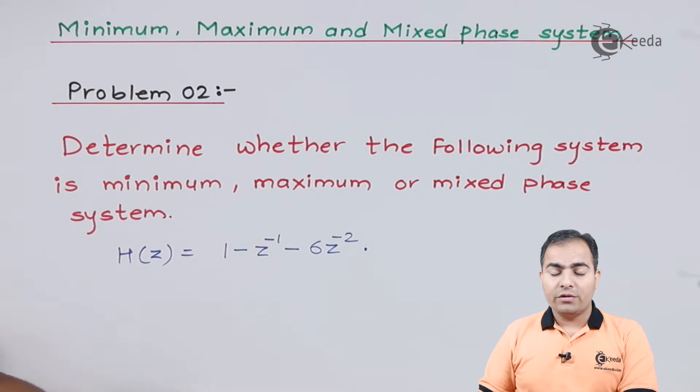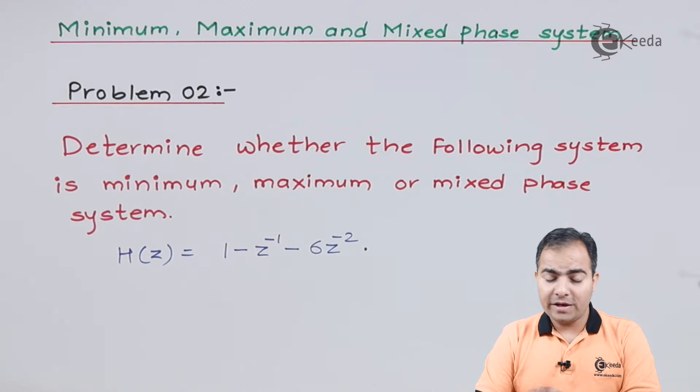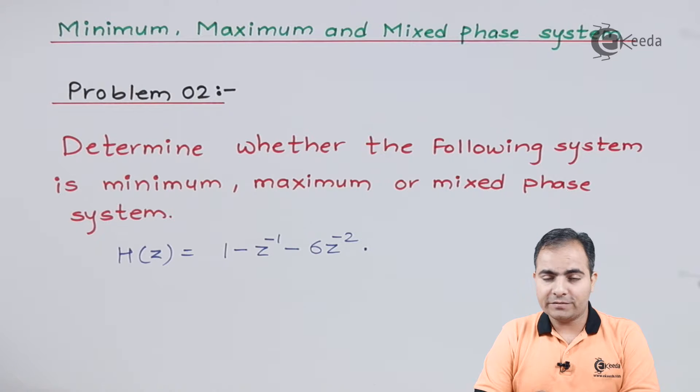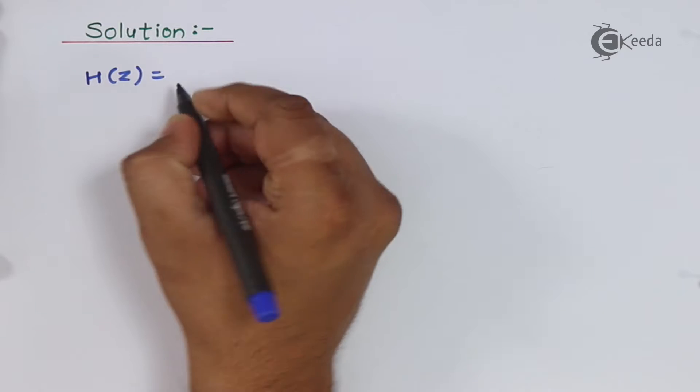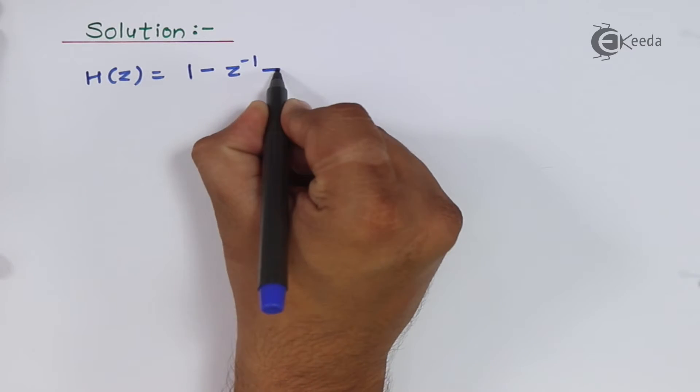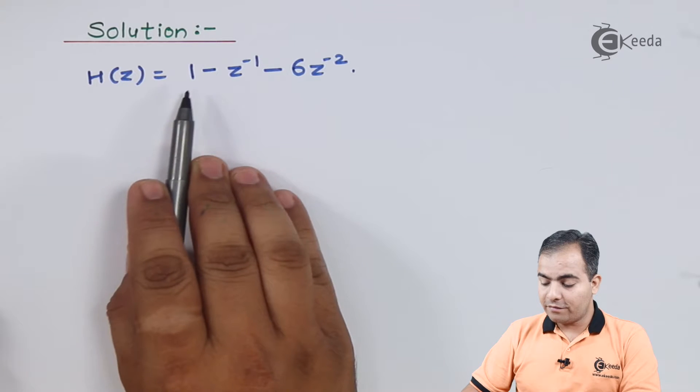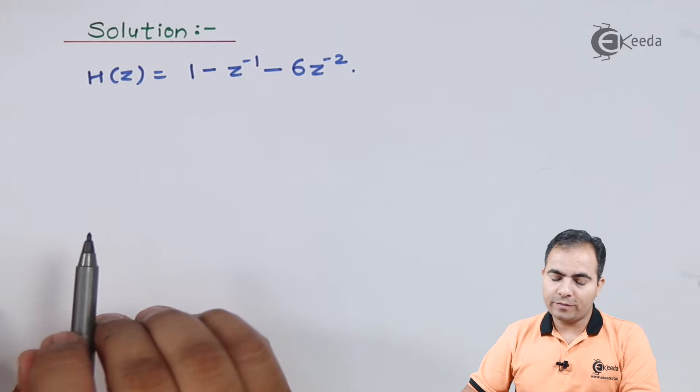You should know the definition of minimum phase, maximum phase, and mixed phase system to solve this question. First, we'll see the solution. H(z) is given as 1 minus z inverse minus 6z to the minus 2.